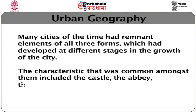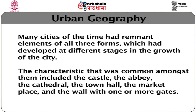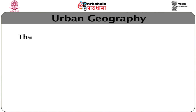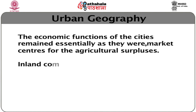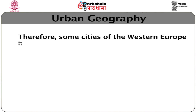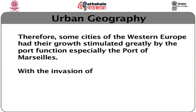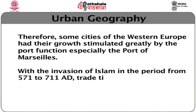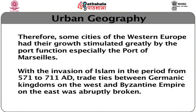The characteristic features common amongst medieval cities included the castle, the abbey, the cathedral, the town hall, the marketplace, and the wall with one or more gates. The economic functions of cities remained essentially as market centres for agricultural surpluses. Inland commerce grew in importance but was not at par with that of the Mediterranean Sea. Some cities of Western Europe had their growth stimulated greatly by the port function. With the invasion of Islam in the period from 571 to 711 AD, trade ties between Germanic kingdoms on the west and the Byzantine Empire on the east were abruptly broken.